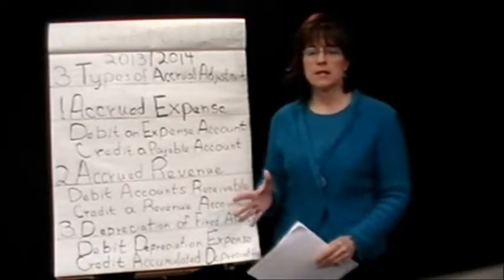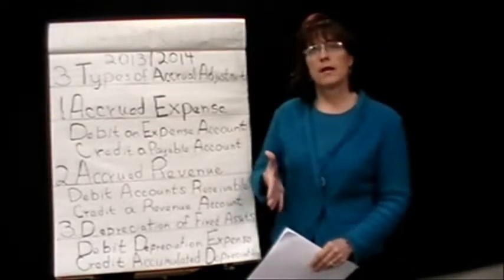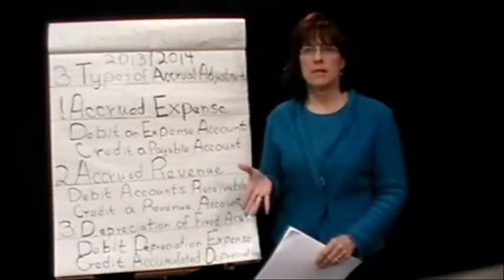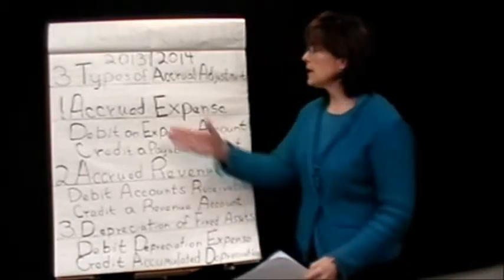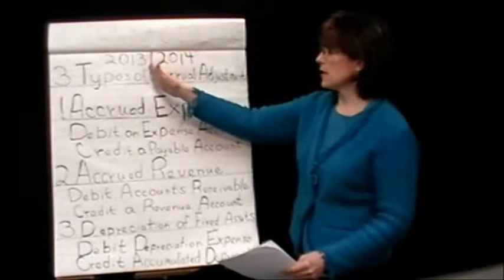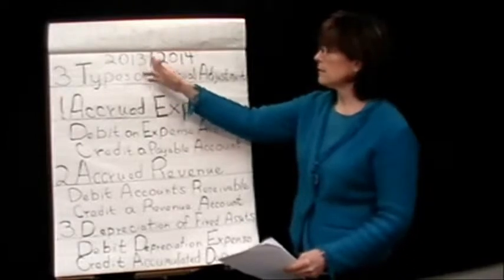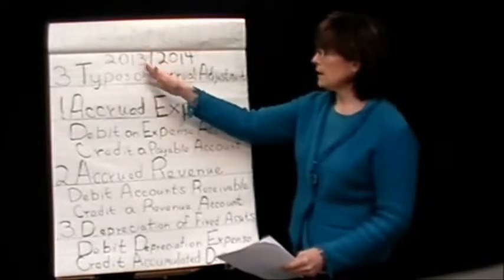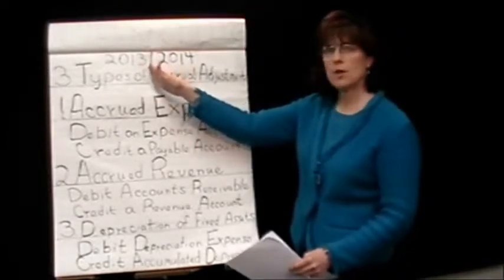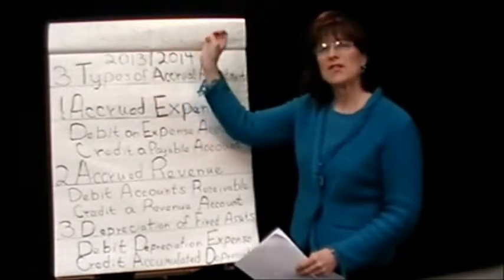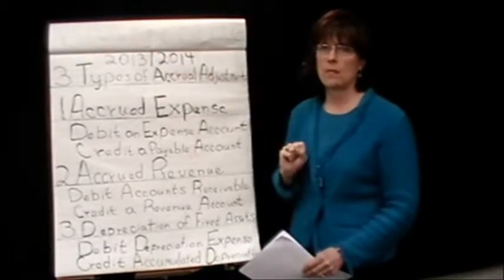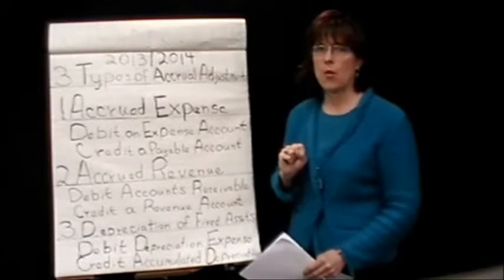Accrual adjustments are entries that have never been recorded on the books. We get up to the end of the accounting period, the end of the year, before we close the books, and we think about whether there is anything that we haven't recorded on the books that needs to be recorded.